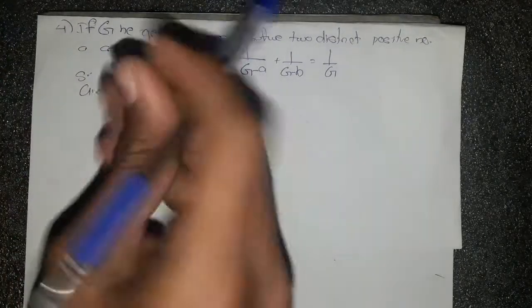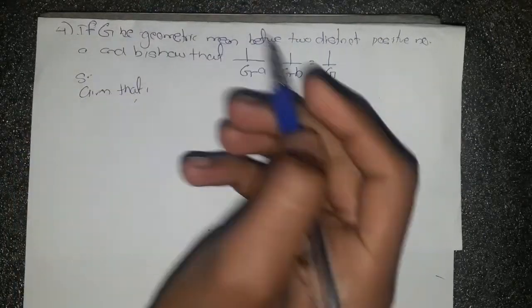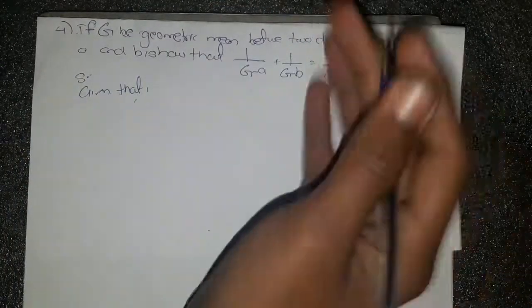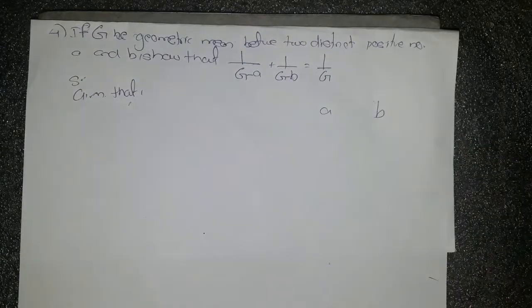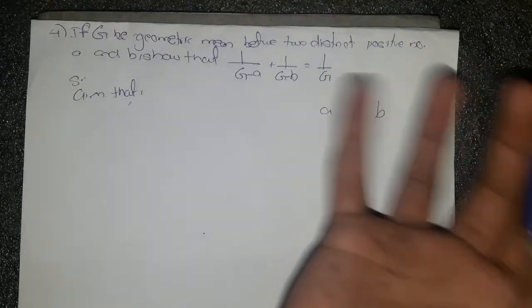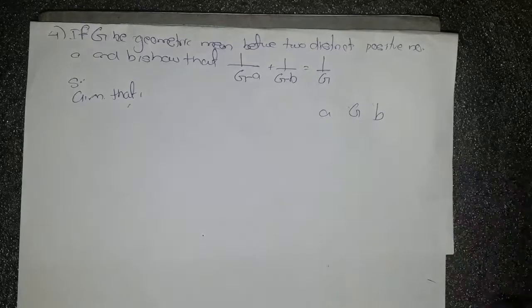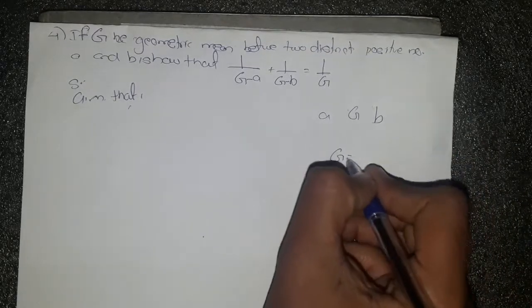The question says that if G is the geometric mean between two distinct positive numbers A and B, that is there are two positive numbers A and B and the geometric mean between these two numbers is denoted by G. We can say the geometric mean G equals to root under AB, and we have to prove that this condition is true.